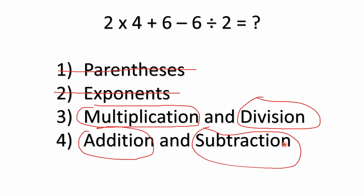We don't have any parentheses, and we don't have any exponents. But we don't toss out the order of operations — we just go down the list. We do have multiplication: two times four. And we do have division: six divided by two. So this tells us we're going to need to do the multiplication and division before we do the addition and subtraction. We have a plus sign and a minus sign, so we're good to go.